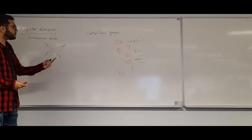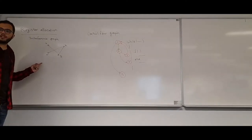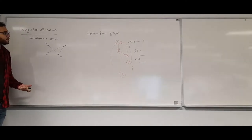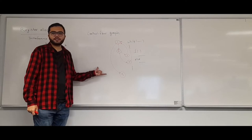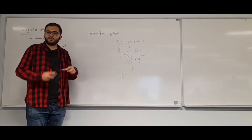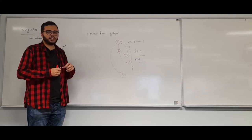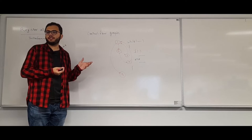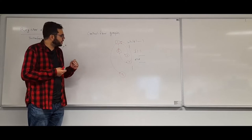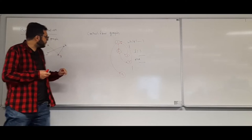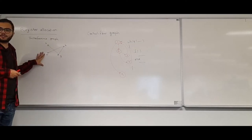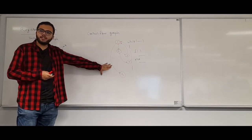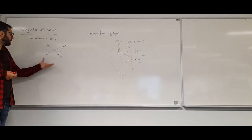The control flow graph and the interference graph are very different. In particular, the control flow graph is sparse — any vertex has at most two outgoing edges. But the interference graph is not necessarily sparse. The goal is to use the sparsity of the control flow graph to find a good way to color the interference graph, and of course we want an approximation.